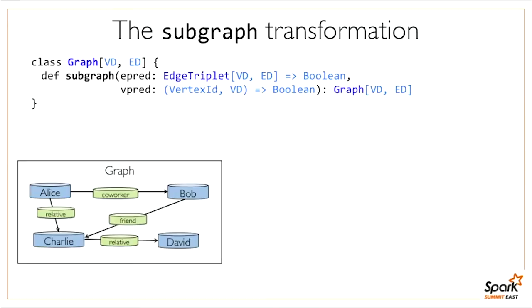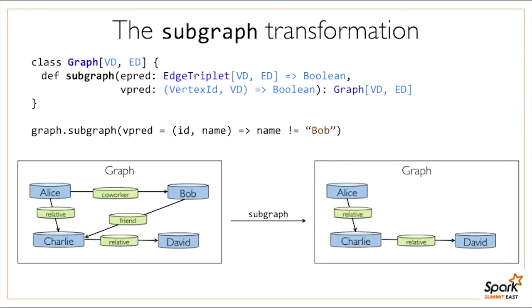We can also give subgraph a vertex predicate—for example, filter out Bob. Now Bob is gone, and also the edges involving Bob are gone. GraphX always ensures that the graph is valid, meaning there are no dangling edges. Subgraph is implemented in a slightly clever way using tombstoning—an array of bits that goes alongside each vertex and edge—which makes filtering fast. Once you filter a graph, you can actually join it very efficiently back with the original graph, a pattern commonly used in GraphX algorithms.